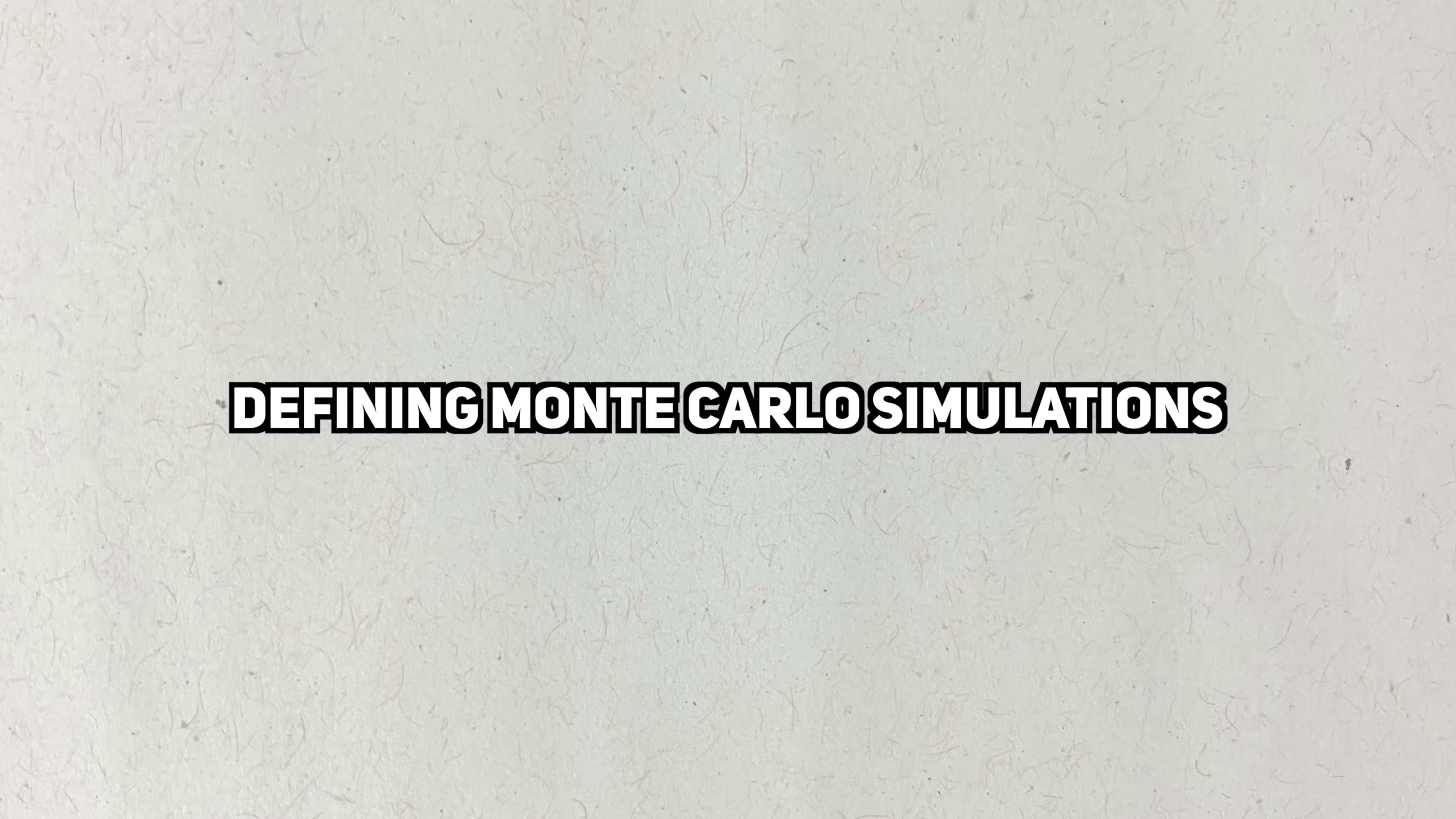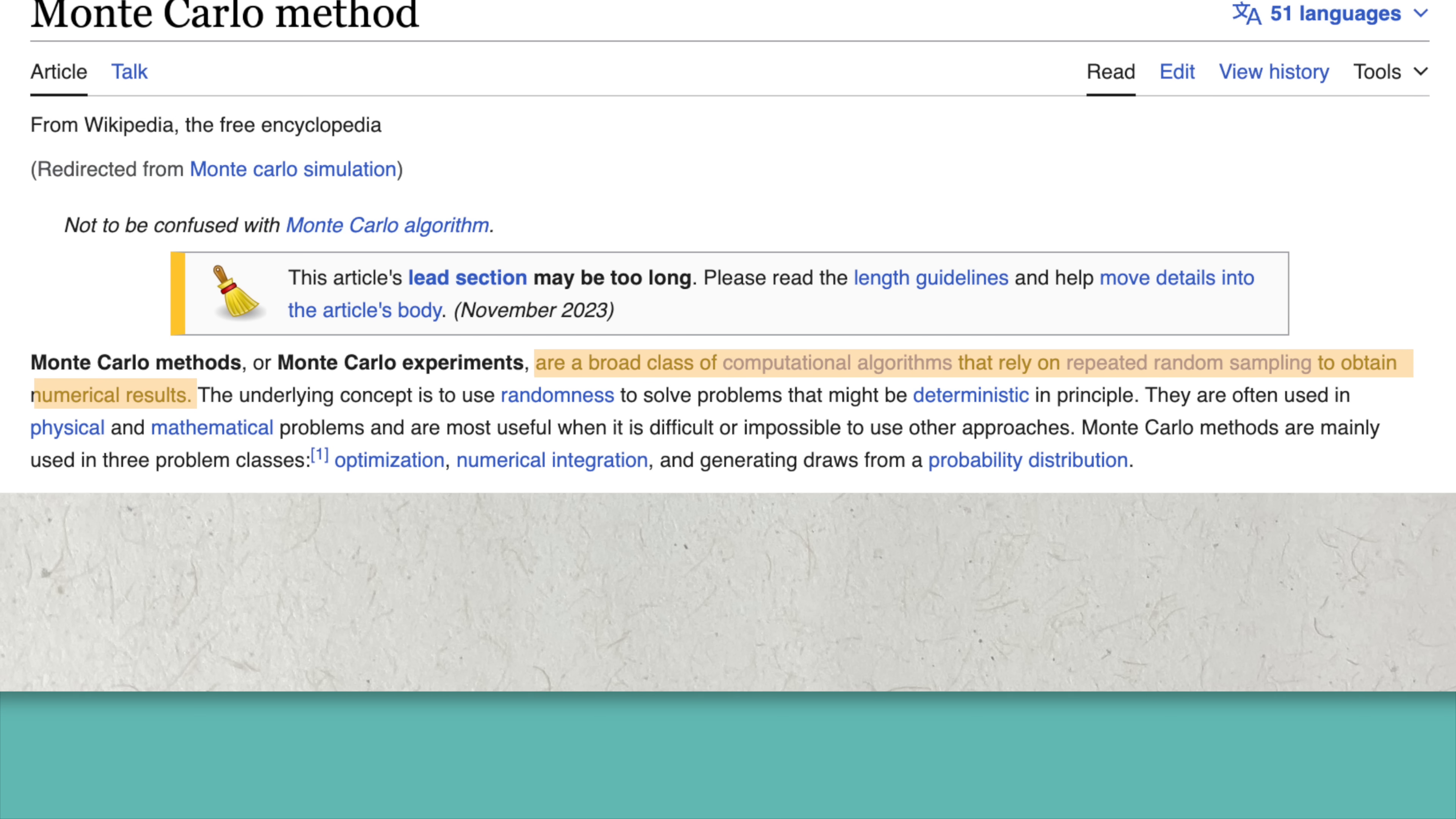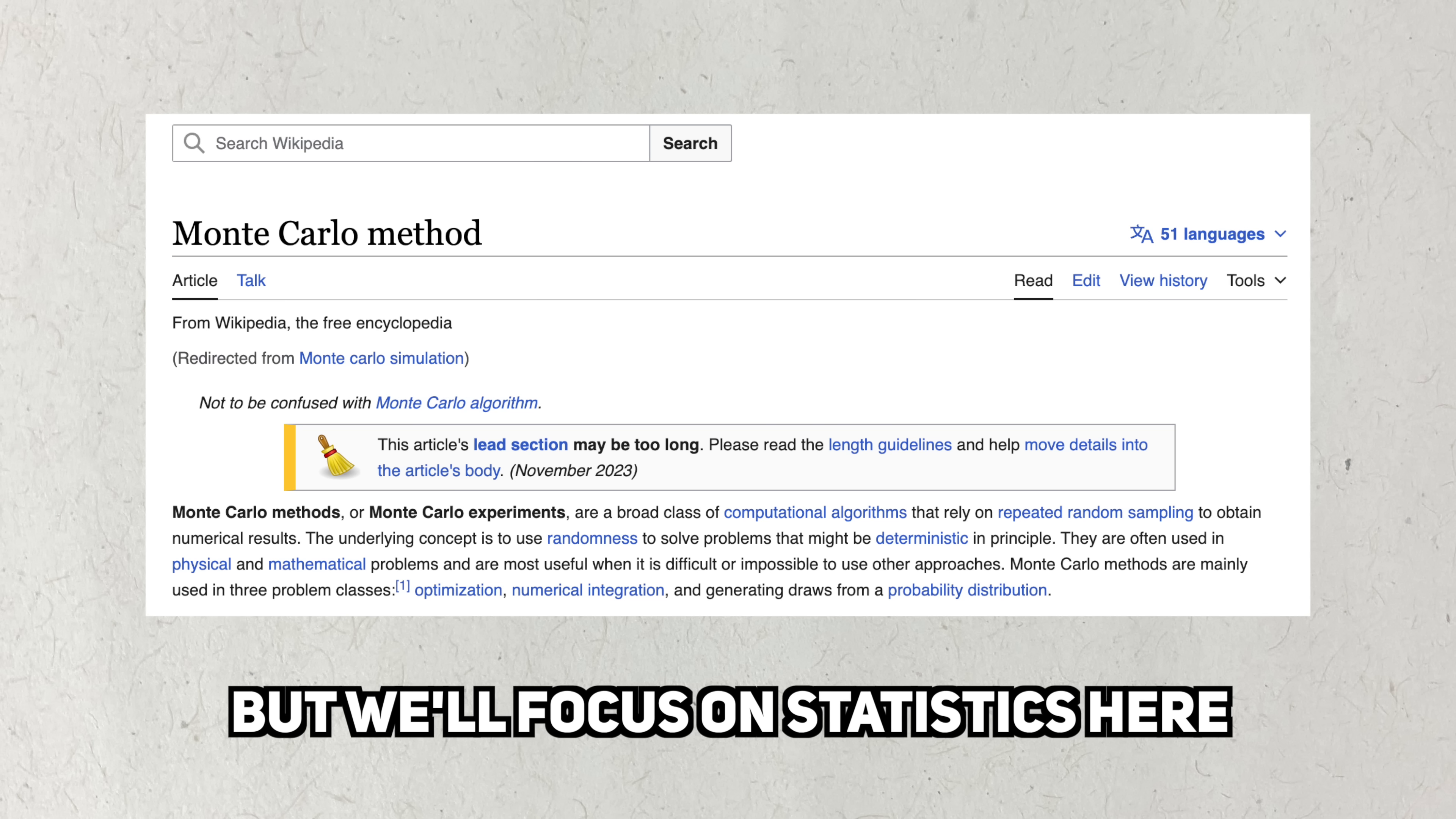Defining Monte Carlo simulations. Monte Carlo simulations are a broad class of computational algorithms that rely on repeated random sampling to obtain numerical results. This definition is correct, but it's so vague that it won't mean anything to someone who's never heard about it. This general definition is meant to encompass all the diverse ways Monte Carlo simulations can be used. We'll be focusing on it from a statistical lens.